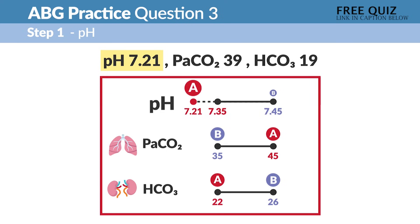So we fill out our marching band suit and step one, looking at the pH because it's primary. 7.21 is way below 7.35, so we know it's the A of acid.